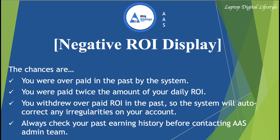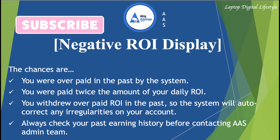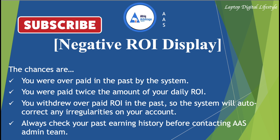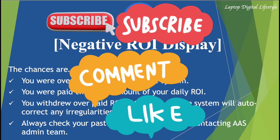Always check your past earning history before contacting the AAS admin team, because responding to a negative ROI query takes a lot of time and they might not even respond depending on their workload. The system cannot go without giving you your daily ROI, and if it happens that the system paid you twice and you withdrew that money, your account will definitely go negative for that day.